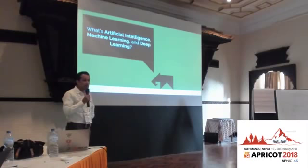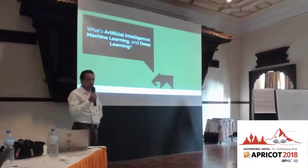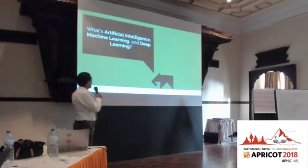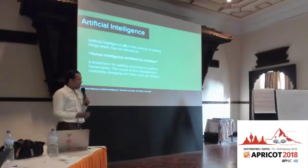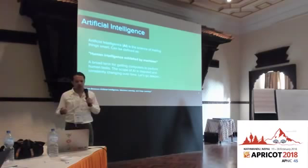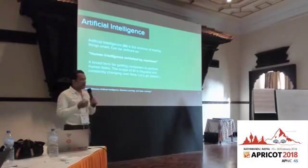Every part of the industry is going to be affected by AI in the near future. I'm sure many of you have heard the terms: artificial intelligence, machine learning, and deep learning. Quick show of hands — how many people have heard one of those terms? And now keep your hand up if you know the difference between all of those things. So you're in the right presentation — we're going to go through this. Artificial intelligence is the science of making things smart — human intelligence exhibited by machines.